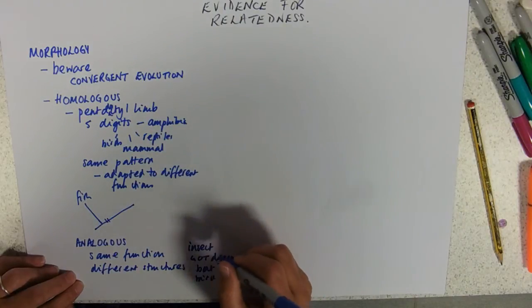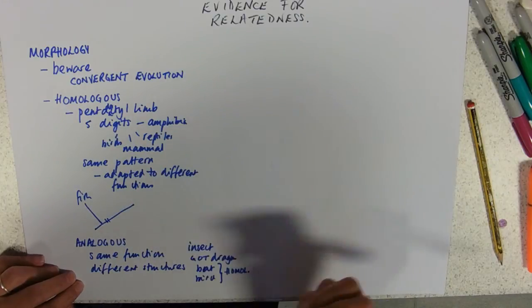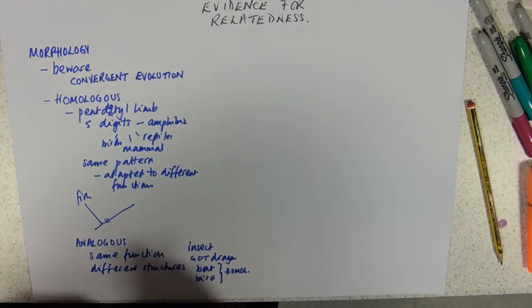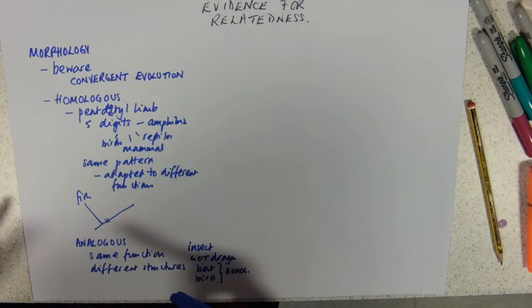Whereas an insect, completely different origin of those structures coming out from the thorax. So they're analogous, but they all do the same function. They allow the organism to fly.